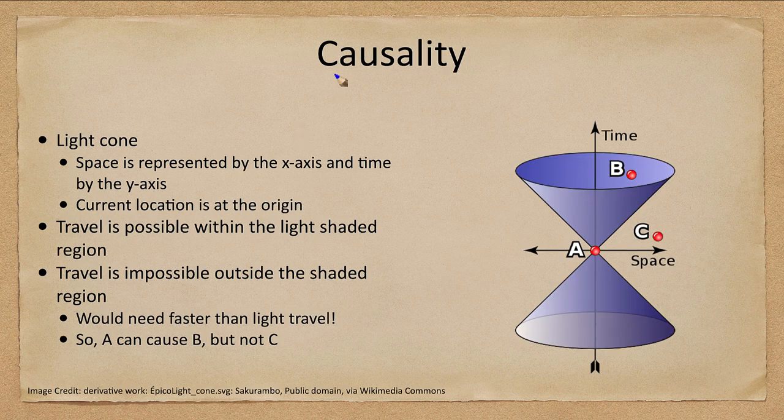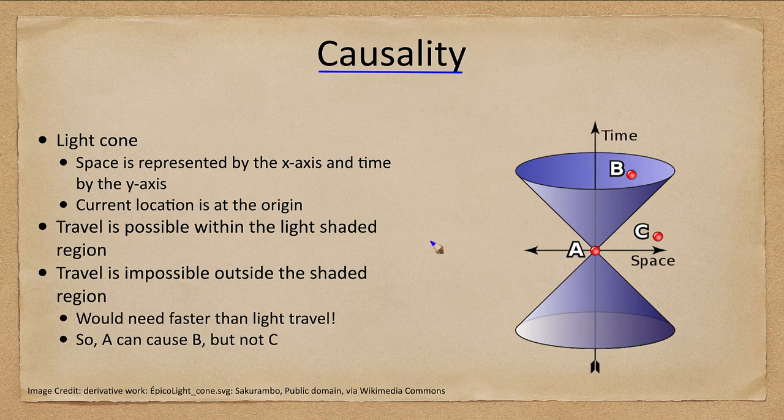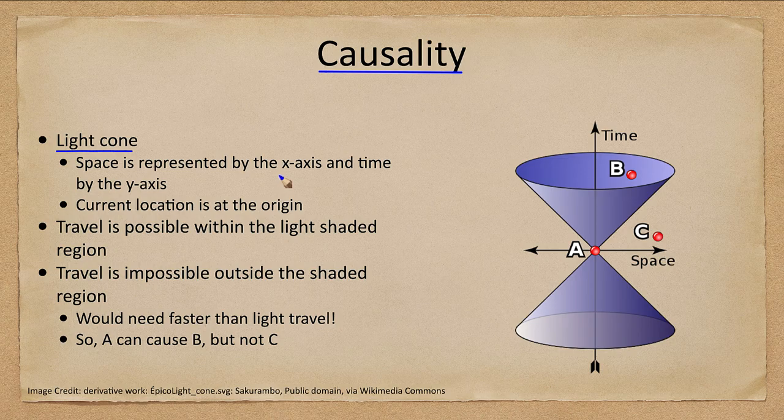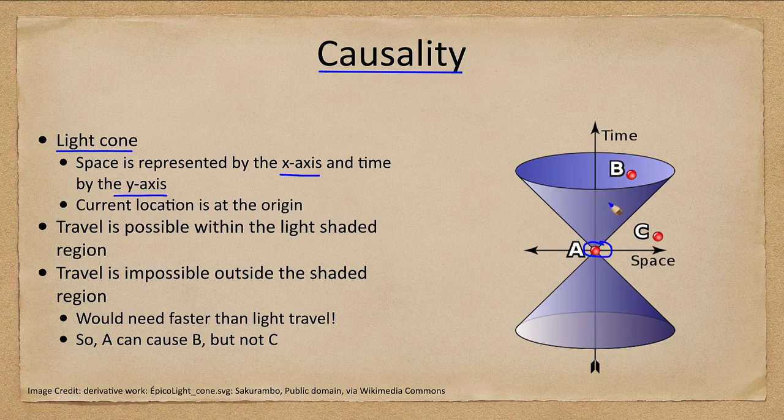Now causality - can one thing cause another? It depends on where you are within the light cone. In the light cone diagram, space is represented by the x-axis and time by the y-axis. We are at point A at the origin. Travel is possible within the shaded region, so something at A can affect something at point B.